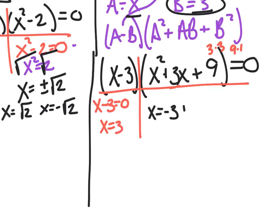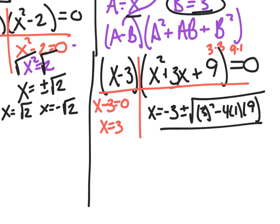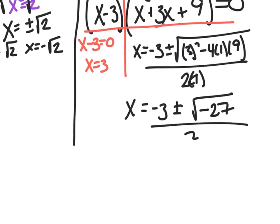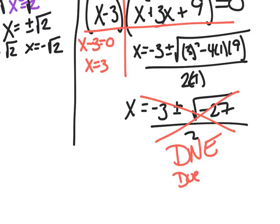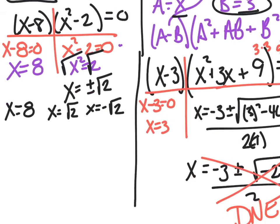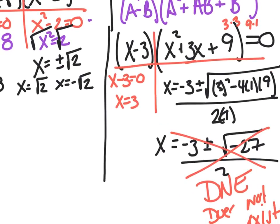Using the quadratic formula: x = (-3 ± √(9 - 36)) / 2 = (-3 ± √(-27)) / 2. Can you take the square root of a negative? No. So this side does not exist — it's imaginary, and we'll talk about that later. The only real solution is x = 3, because the other factor yields imaginary results. Remember, we were asked to find all real solutions.